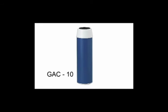The GAC-10 has a height of 9 and 3/4 inches with a diameter of 2 and 7/8 inches and a flow rate of 1 gallon per minute for up to 5,000 gallons. The GAC-10 can be found under the following part number.